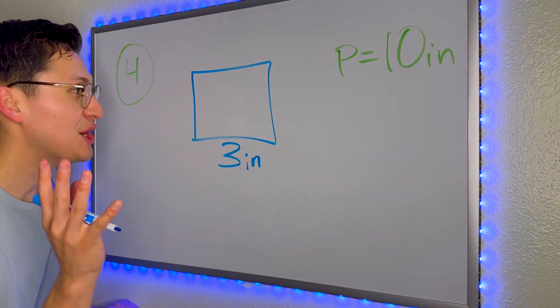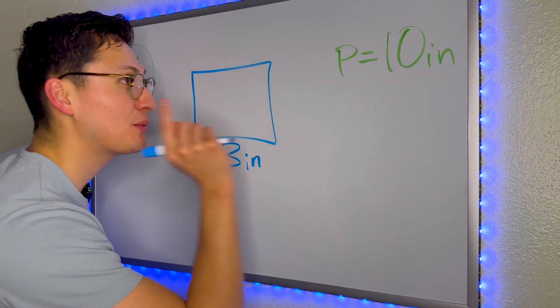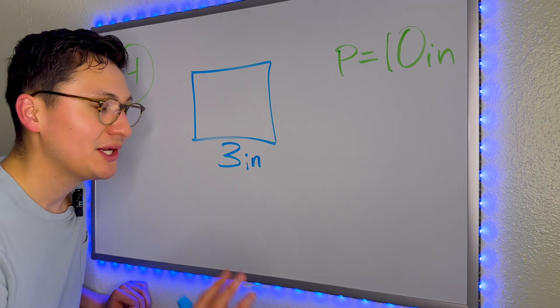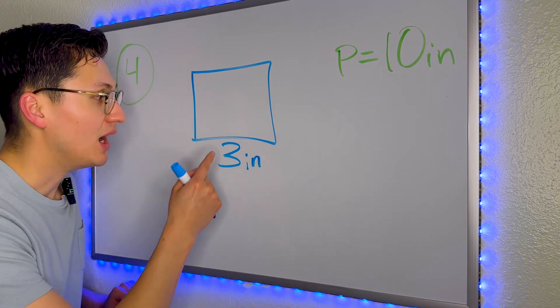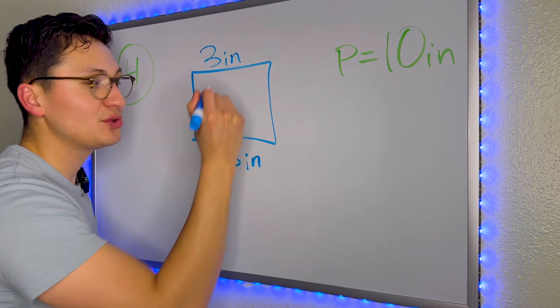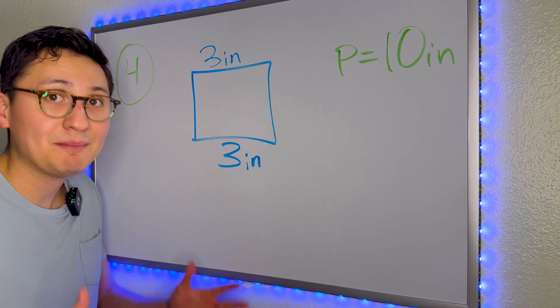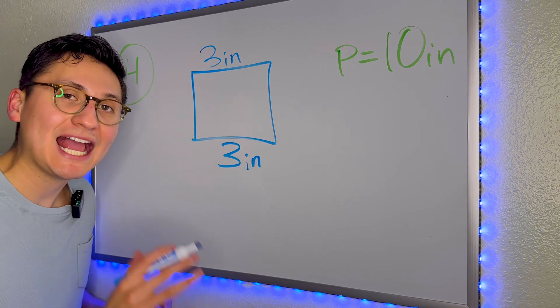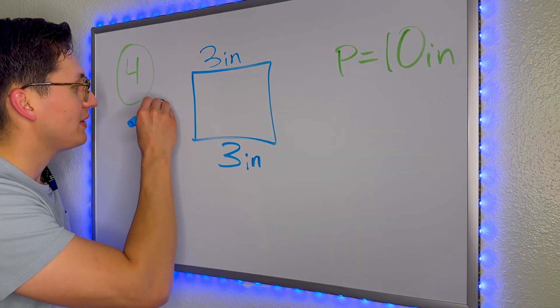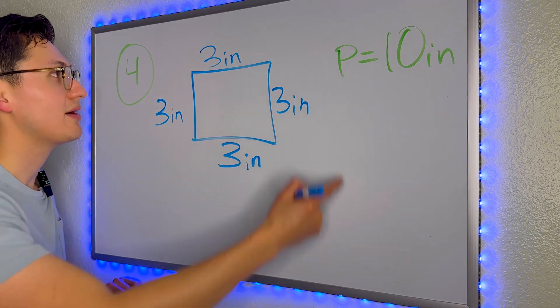For this last problem, we have another mystery shape. They didn't give us the name of it. All they gave us was one side and the perimeter of the entire shape. So let's break this down step by step. So we know that whether this is a square or rectangle, opposite sides are equal. So if this is 3 inches, that means this top side is also 3 inches. Now what we can do is test to see if this is a square because it looks like a square and might be a square. So let's test out to see if it actually is a square. So in squares, every side is equal. So every side must be 3 inches.